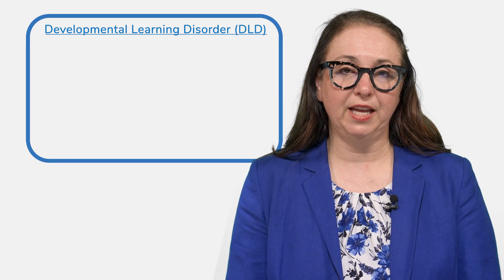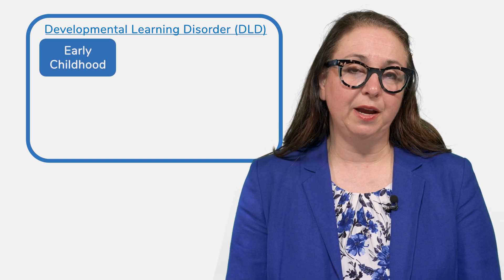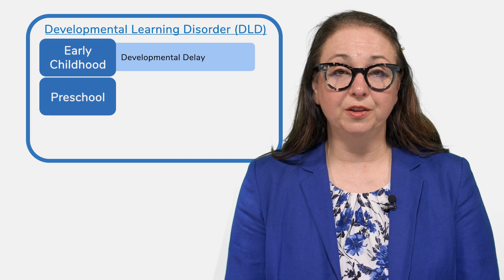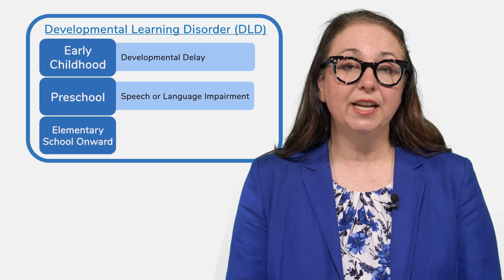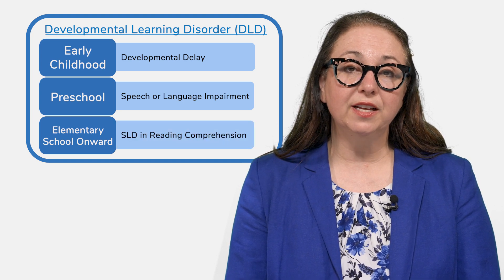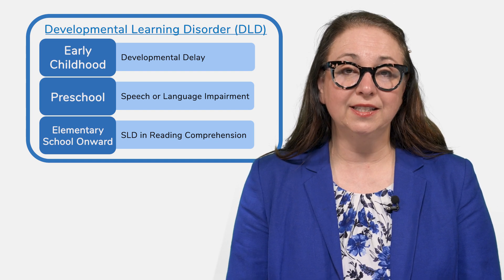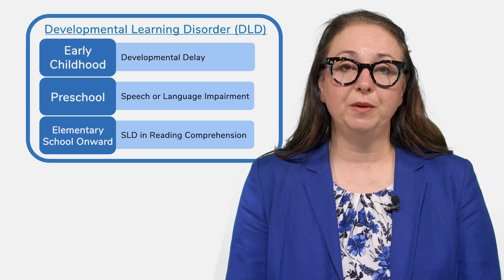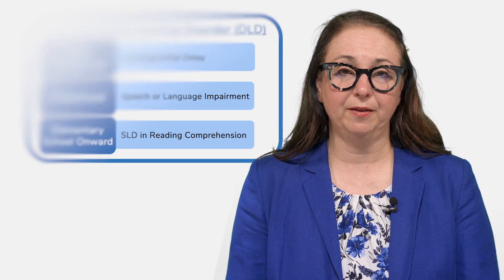Children with DLD in the school systems are often identified for services through multiple different labels. In the early childhood period they may be identified as having a developmental delay; in preschool, a speech and language impairment; and in elementary school and beyond, a specific learning disability in comprehension. In 2017, an international consensus was gathered to reconcile these different labels so that children could be more appropriately identified and advocated for across the lifespan. In September 2023, the US federal government provided guidance that we can use the label DLD to qualify for IDEA services, so there is no need to use variable labels — we can use the same label so that children can be identified and advocated for in the school system.